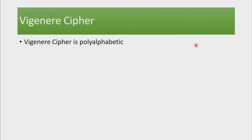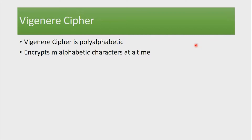The Vigenère Cipher is a type of polyalphabetic cryptosystem, which means that it will encrypt m alphabetic characters at a time. So unlike monoalphabetic ciphers, which work on each individual plain text element and encrypt it using the key, this will encrypt several characters at a time. The result is that the cipher text is much more secure than that of a monoalphabetic cipher.